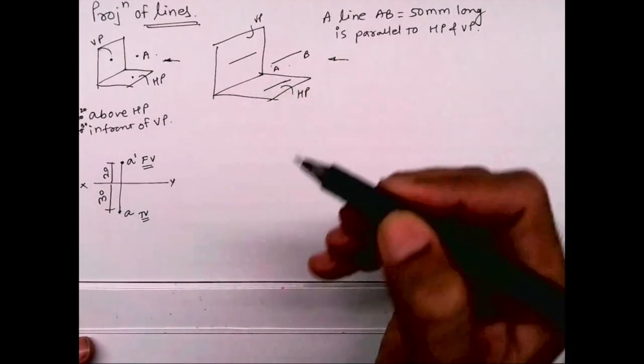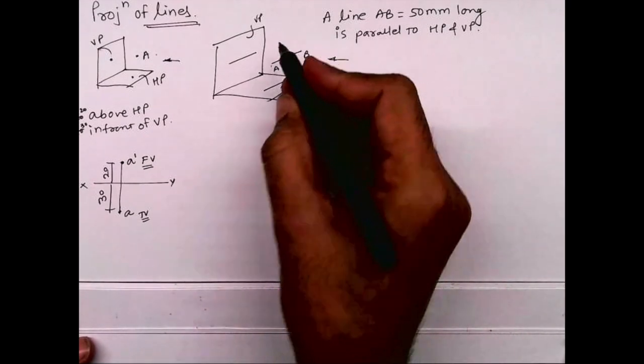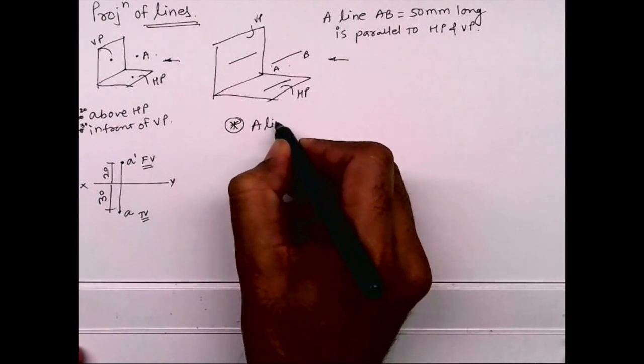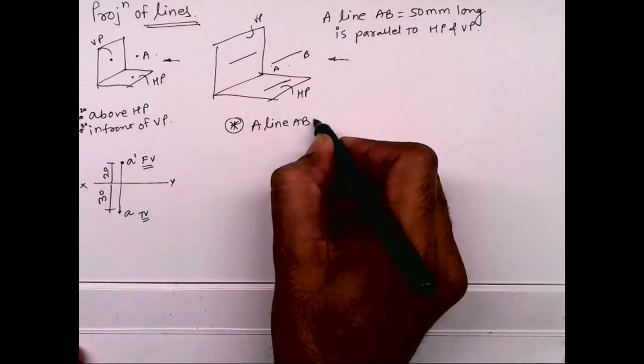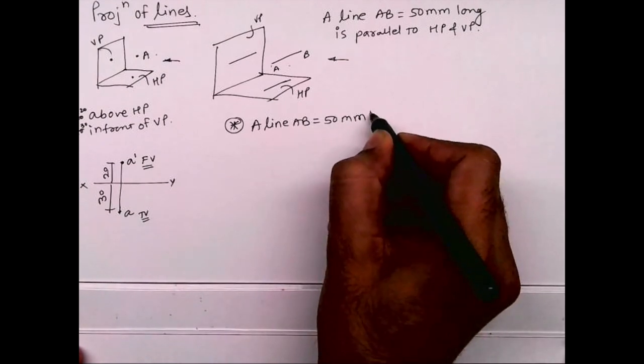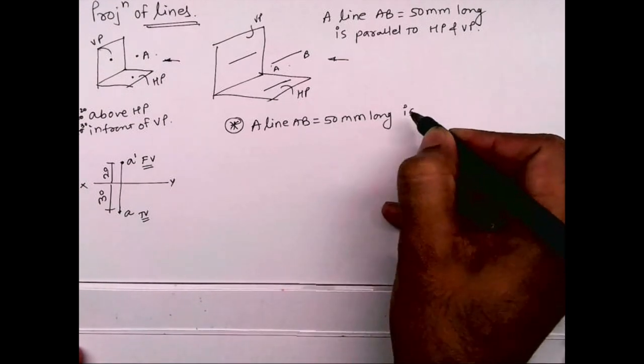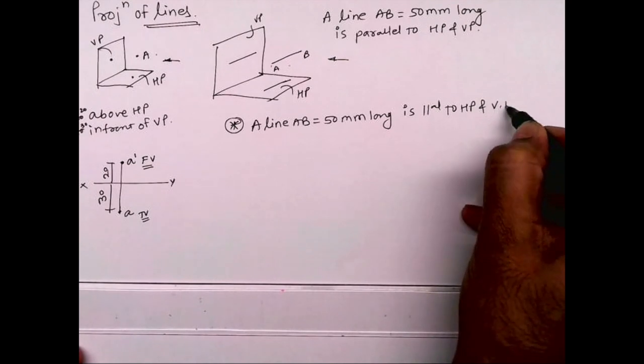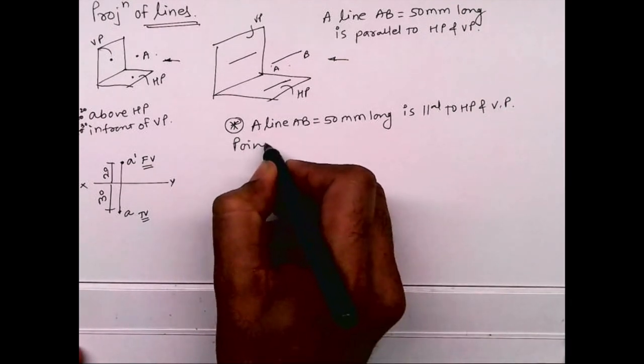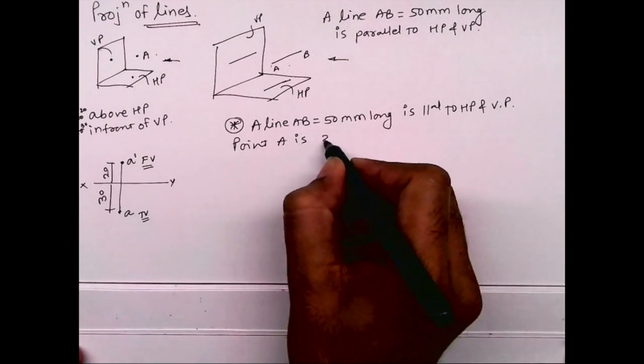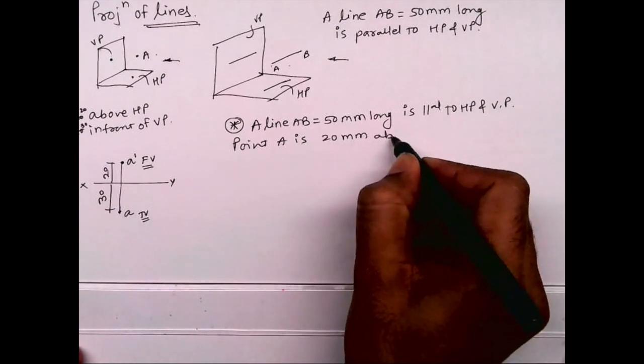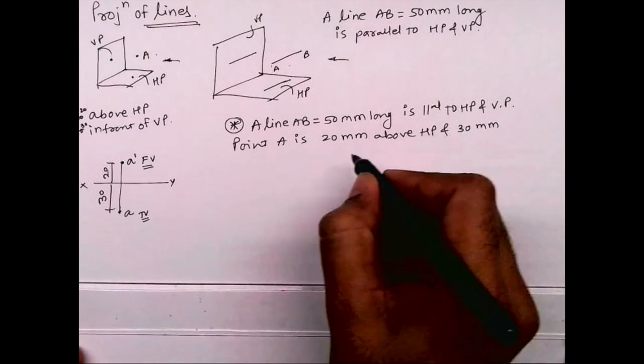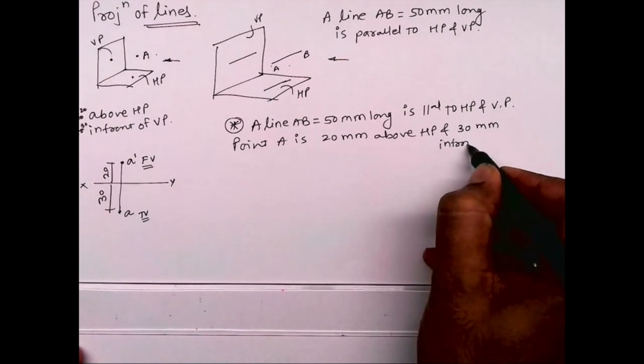So I'm writing this sum again. A line AB, 50 mm long, is parallel to HP and VP. Point A is 20 mm above HP and 30 mm in front of VP.